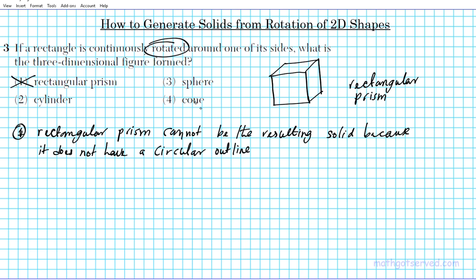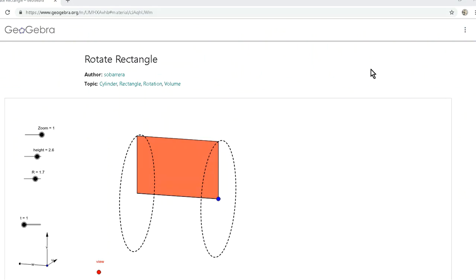So this has absolutely no circular outlines, it's all straight. So that tells us it's automatically eliminated. But if we think about a cylinder, a sphere, and a cone, these three other options have circular outlines. We want to carefully consider them because you can actually create all these three solids by rotating two-dimensional shapes. So the question is, which one is a result of rotating a rectangle continuously around one of its sides?